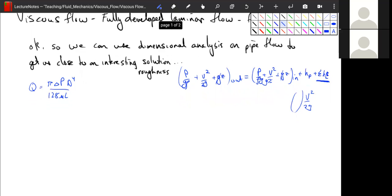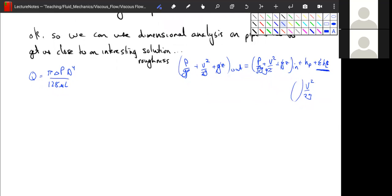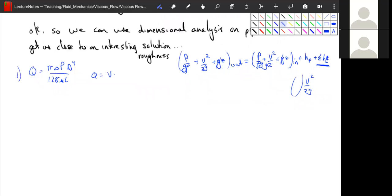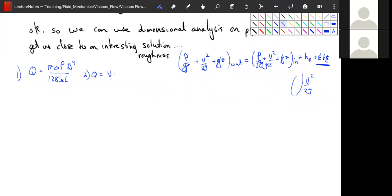Let's do some rearranging of this. So we're going to first say that q is equal to v times a. So this is equation one. We're going to call this equation two. q is equal to v times a, which is equal to v times pi d squared divided by 4.